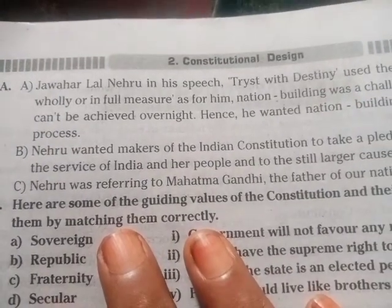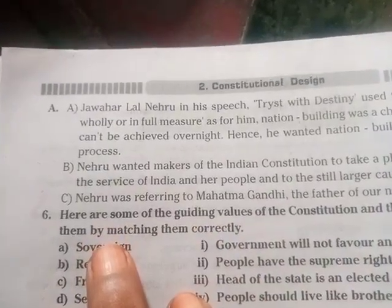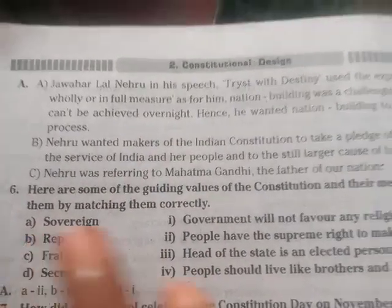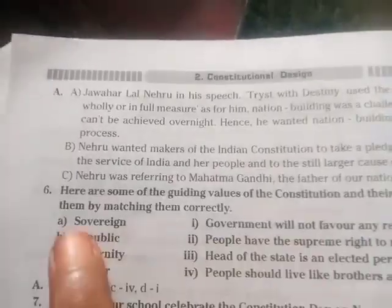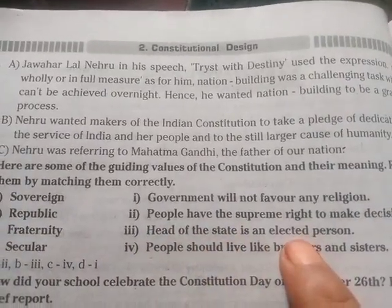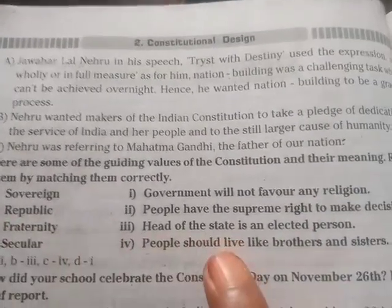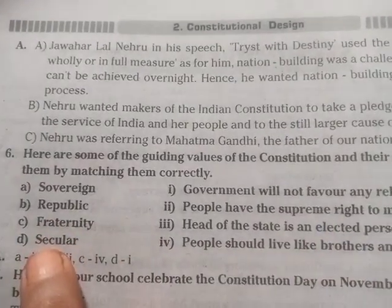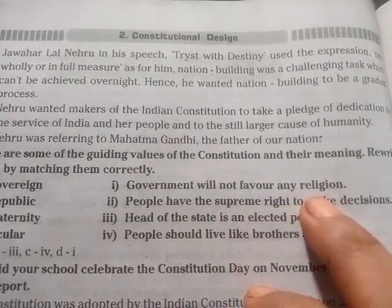Question 6: Here are some of the guiding values of the constitution and their meanings. Rewrite them by matching them correctly. A. Sovereign — People have the supreme right to make decisions. B. Republic — Head of the state is an elected person. C. Fraternity — People should live like brothers and sisters. D. Secular — Government will not favor any religion.